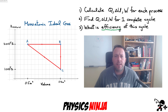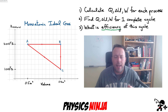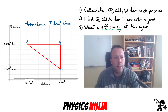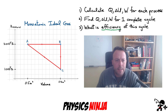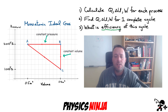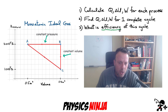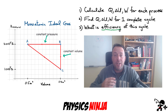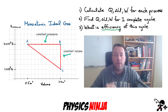Hi everybody, Physics Ninja here. Today I have a nice PV diagram cycle problem. We're going to consider a monoatomic ideal gas and bring it through this process. We're going from A to B at constant pressure, then B to C at constant volume, and then C to A where both pressure and volume vary along a straight line.